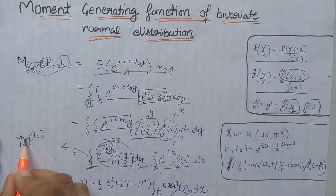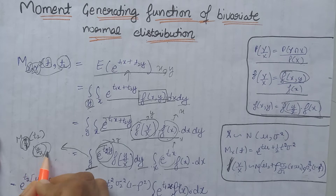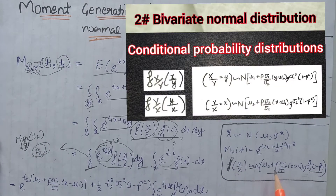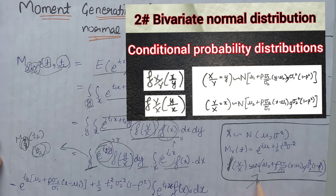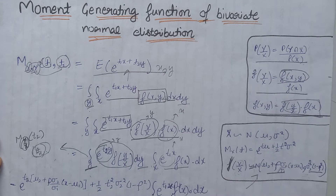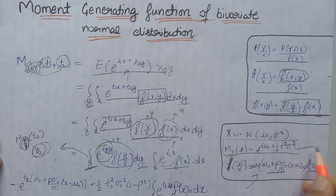We know that the variable y divided by x — that is, y given x — follows a normal distribution with a specific conditional mean and variance. We have already uploaded a video on our channel related to this topic where we calculated the conditional distribution of y for fixed x, so you can watch that video as well.